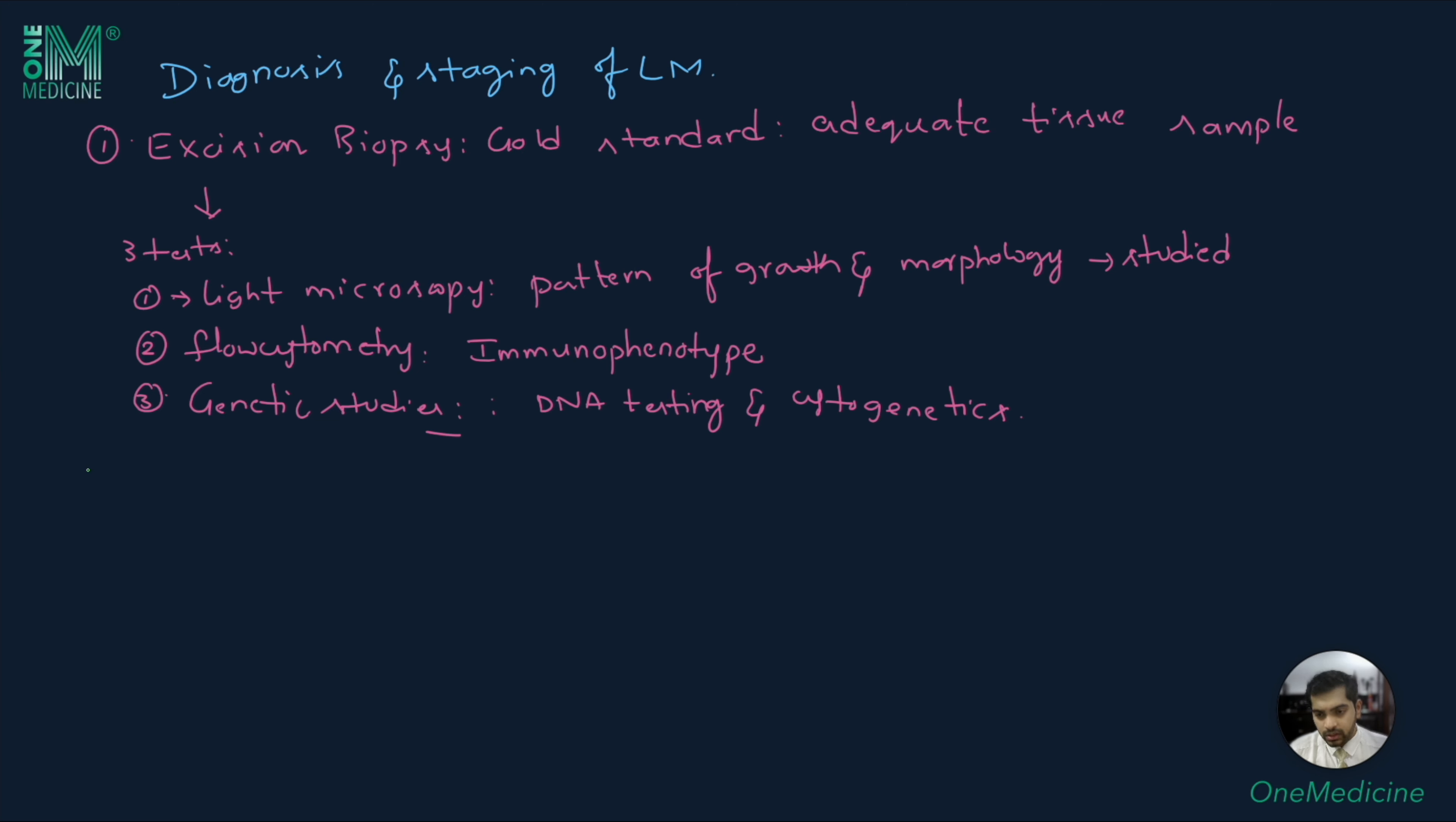One important thing to note is needle aspirates or extranodal masses are not adequate to come to a diagnosis. The diagnosis and staging of leukemia and lymphoma includes bilateral iliac crest bone marrow sampling, including biopsies and aspiration.